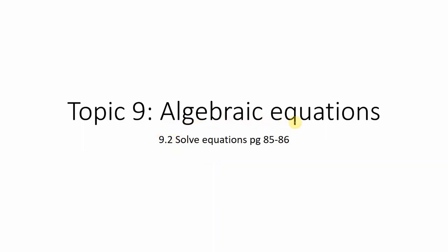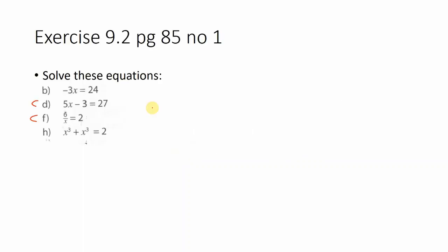We are busy with topic 9, algebraic equations, and more particularly we are going to focus on 9.2 solving equations, page 85 to 86. For number D of exercise 9.2, we have 5x minus 3 equals 27. Our strategy is to have the variables on one side and the numbers on the other side. The 27 is already on the right, and the negative 3 we want to move across the equal sign.